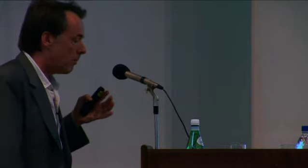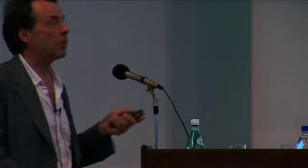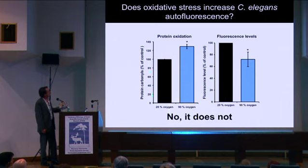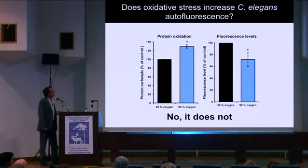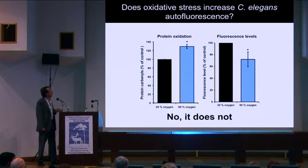Starting from our suspicion about the oxidative damage theory, we decided to interrogate this idea more carefully. In mammalian cells, if you treat them with hyperoxia you can induce increased levels of lipofuscin. This would predict that treating worms with treatments that increase oxidative damage should increase lipofuscin levels. We used hyperoxia and also a level of iron that increases damage levels. The data from hyperoxia shows that hyperoxia increases the level of protein oxidation — protein carbonylation — but it actually decreases the level of fluorescence rather than increasing it. So oxidative damage does not increase C. elegans autofluorescence.